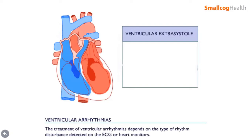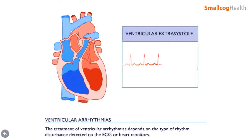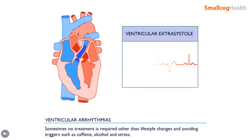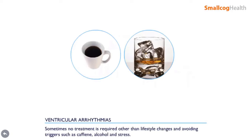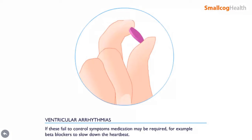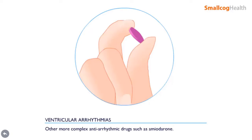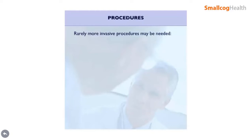The treatment of ventricular arrhythmias depends on the type of rhythm disturbance detected on the ECG or heart monitors. Sometimes no treatment is required other than lifestyle changes and avoiding triggers such as caffeine, alcohol, and stress. If these fail to control symptoms, medication may be required — for example, beta blockers to slow down the heartbeat, or more complex anti-arrhythmic drugs such as amiodarone. Rarely, more invasive procedures may be needed, including cardioversion, catheter ablation, and implantable cardioverter defibrillator.